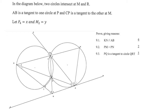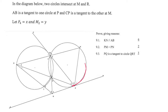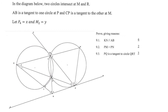In this question we are told that AB is a tangent to this circle and CP is a tangent to the other circle. P4 is equal to x and M2 is equal to y — sorry, the quality of the image isn't that good, it's the best I could find — but that's supposed to be x and M2 is supposed to be y, so I'm just going to write it a little bit bigger.